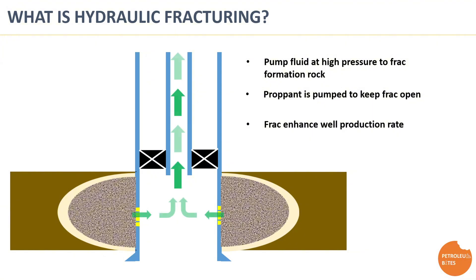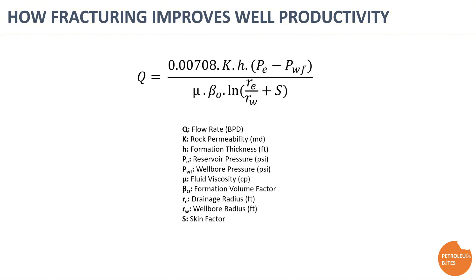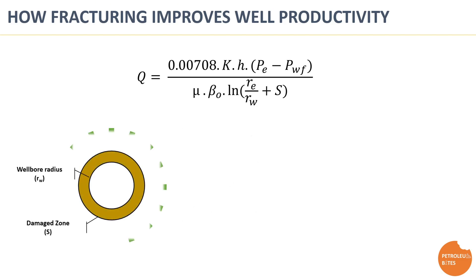Let's understand how hydraulic fracturing improves well productivity. Darcy's law gathers all contributing elements of rock and fluid properties that affect flow rate. Fluid flows to the wellbore passing through a damage zone and through only the open wellbore area, which is controlled by wellbore radius. As you can see, all parameters in the equation related to rock and reservoir fluid properties cannot be changed — only wellbore radius and skin factor are changeable parameters. That's exactly what the frack is working on.